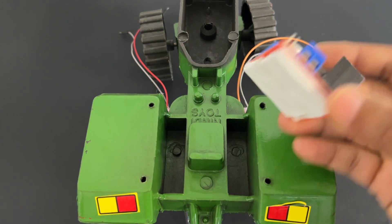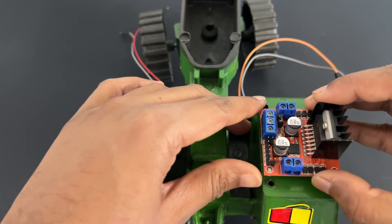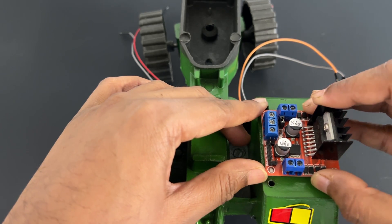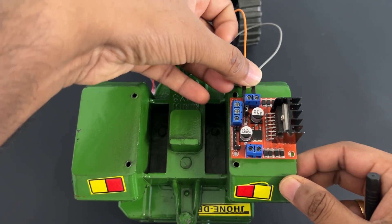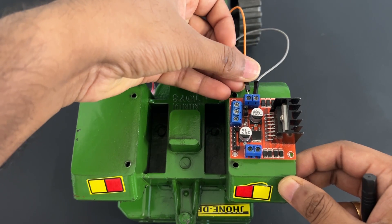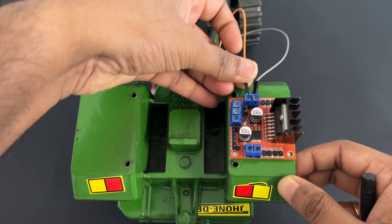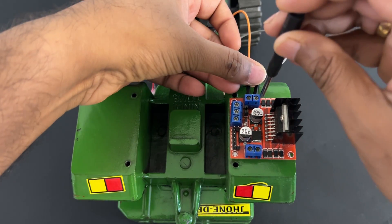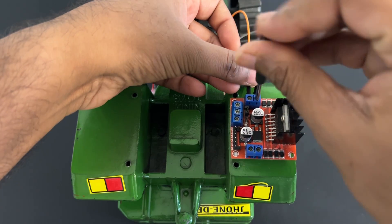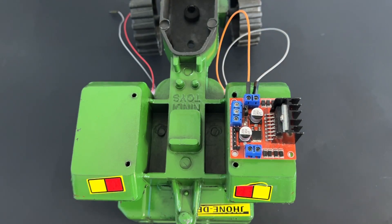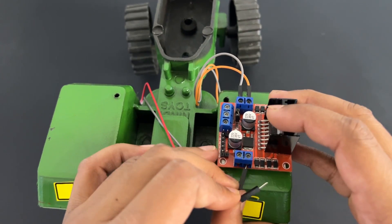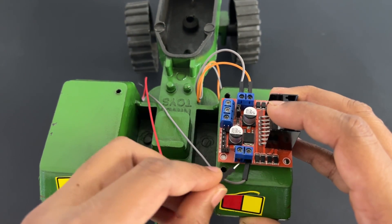Fix L298N motor driver module on chassis using double sided tape. Connect right side motor to OUT1 and OUT2 pins of L298N motor driver module. Now connect left side motor to OUT3 and OUT4 pins of motor driver module.